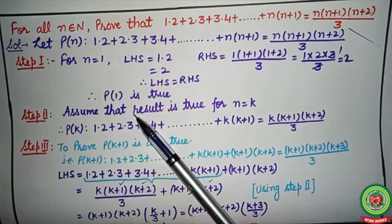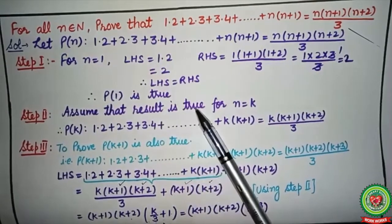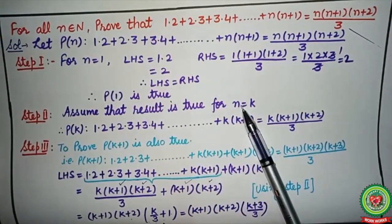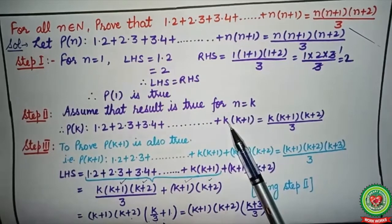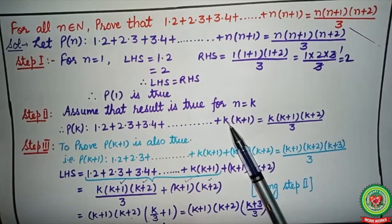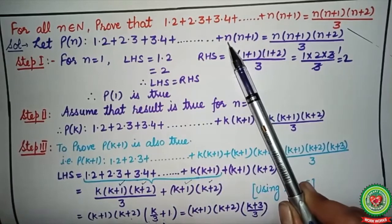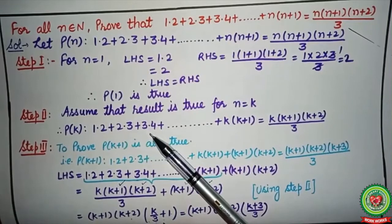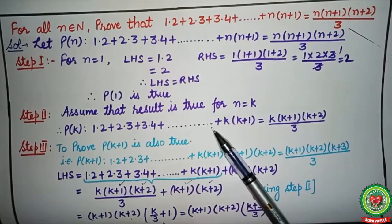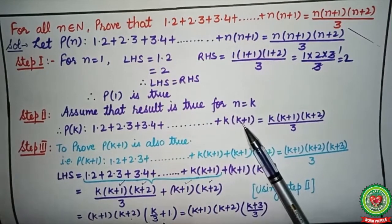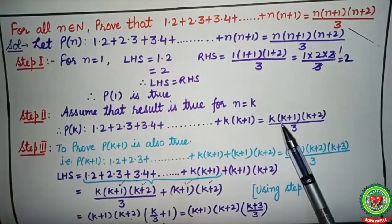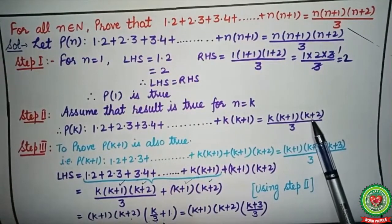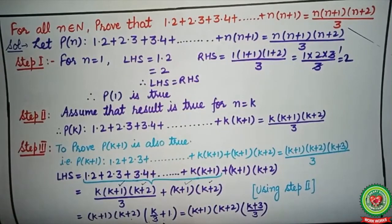In Step 2, we assume the result is true for n = k. To write this, simply replace n with k: 1·2 + 2·3 + 3·4 + ... + k(k+1) = k(k+1)(k+2)/3.